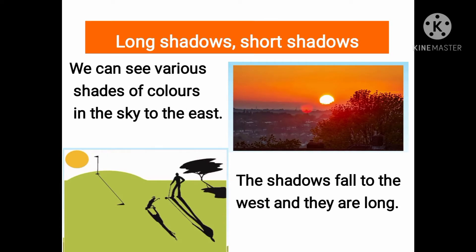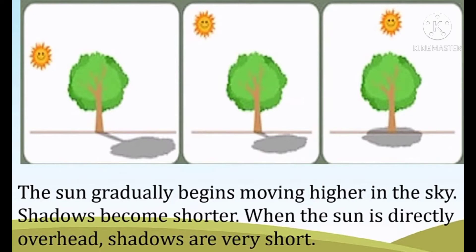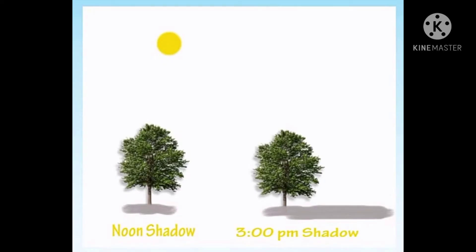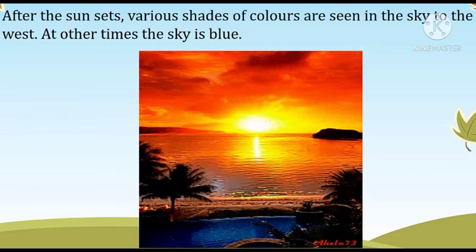Long shadows and short shadows: In the morning, the sun rises in the east. Before the sun rises, we can see various shades of colors in the sky to the east. When the sun rises, its light is soft. The shadows fall to the west and they are long. The sun gradually begins moving higher in the sky. Shadows become shorter. When the sun is directly overhead, shadows are very short. The sun slowly begins shifting to the west. The shadows begin moving to the east and become longer. After the sun sets, various shades of colors are seen in the sky to the west.